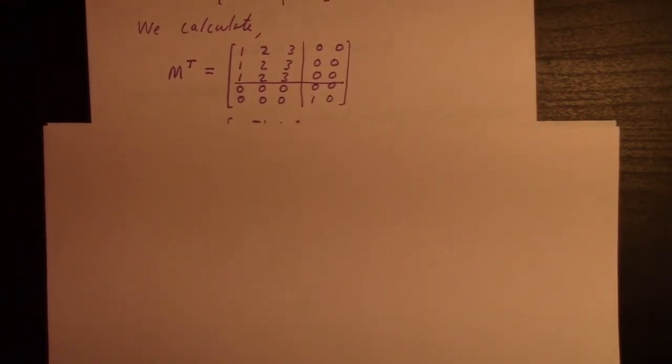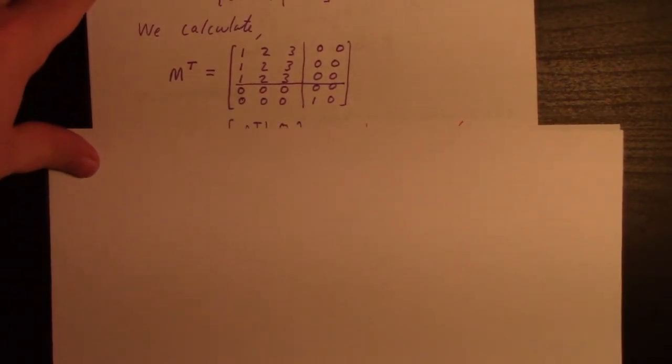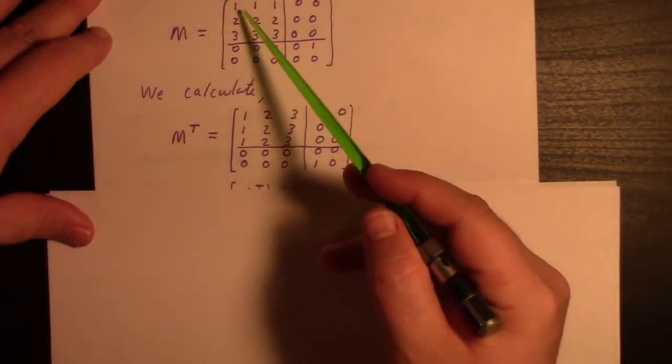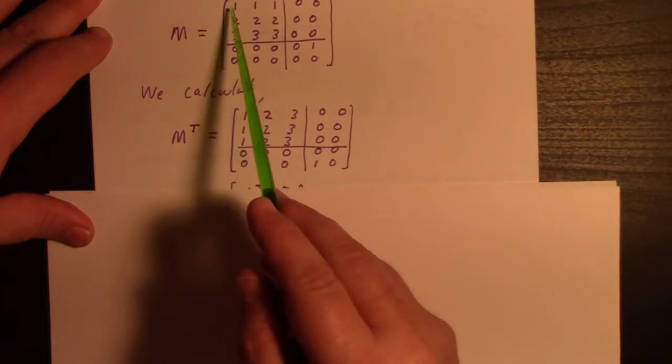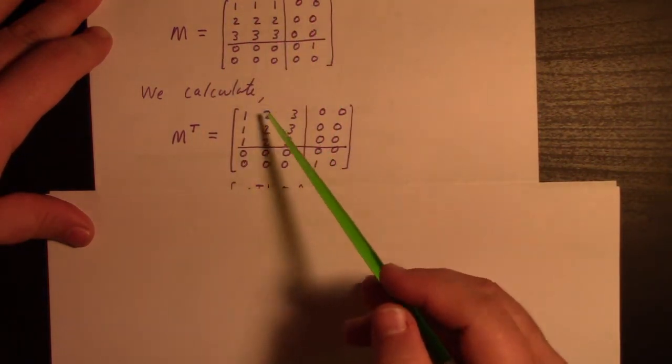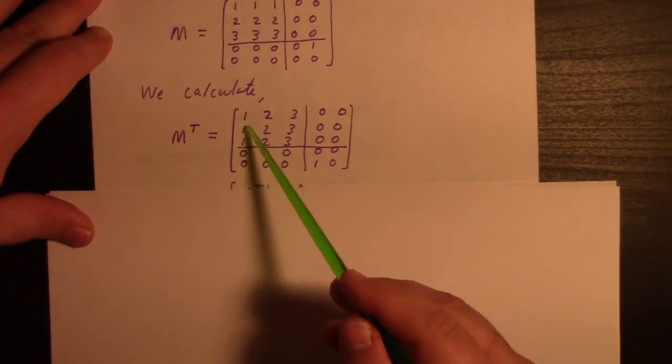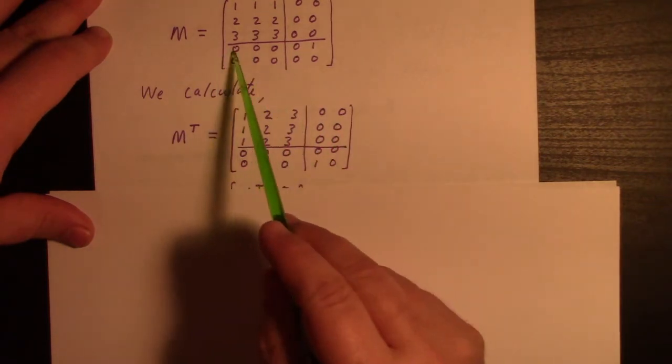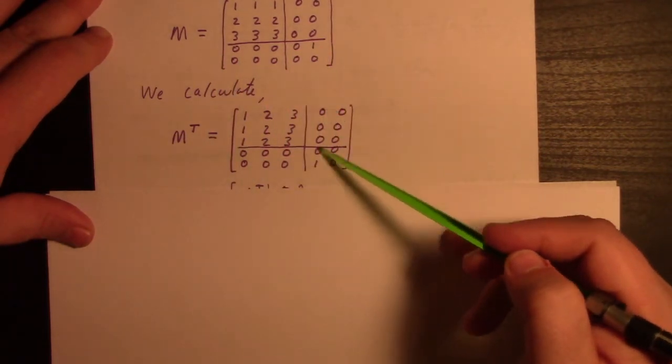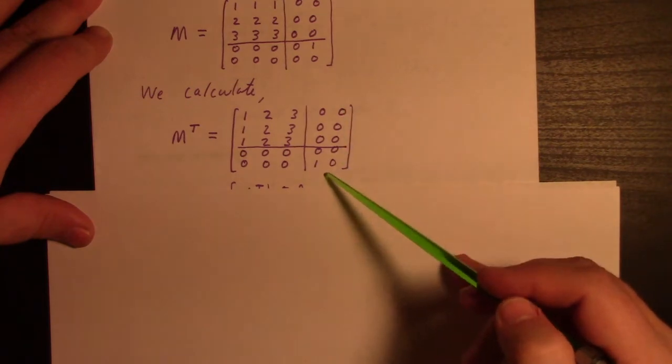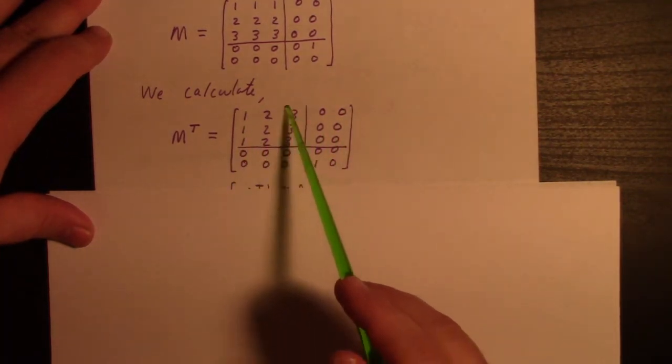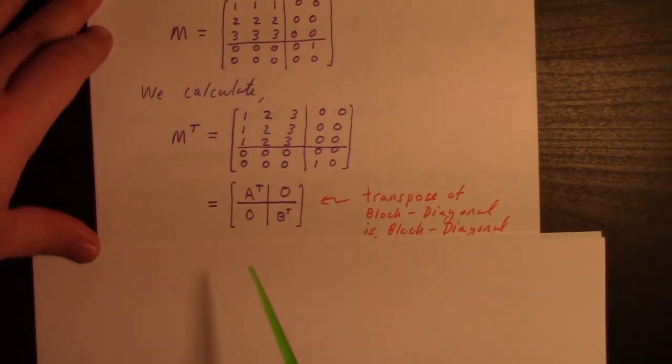How does that work? The transpose changes rows to columns. Row one becomes column one in the transpose, row two becomes column two, and so on. Lo and behold, this is exactly A transpose and B transpose.